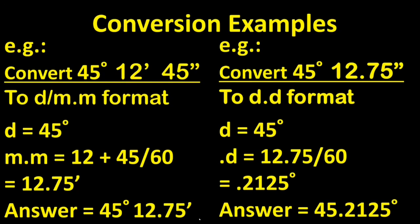Let's look at these examples. We're going to start by converting 45 degrees, 12 minutes, 45 seconds to the degree decimal minute format. The degree remains the same at 45 degrees. For the decimal minute, the minute part remains the same at 12, but the decimal part of the minute is the seconds divided by 60, which is 12.75. So the answer is 45 degrees, 12.75 minutes. Now let's convert 45 degrees, 12.75 minutes to decimal degree format. The degree remains the same at 45 degrees. The decimal degree is simply calculated by dividing 12.75 by 60, which is 0.2125, giving the answer 45.2125 degrees.